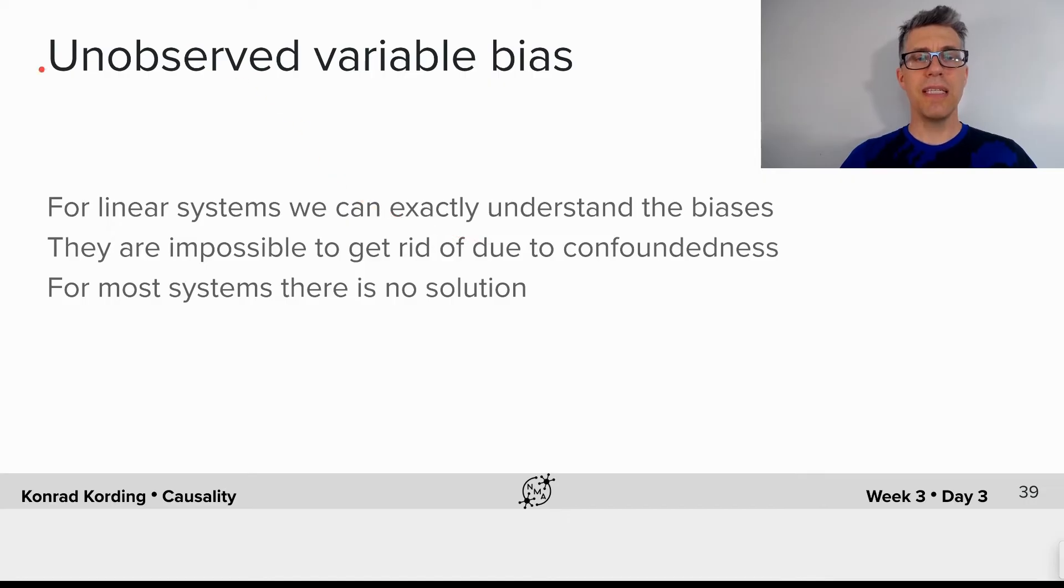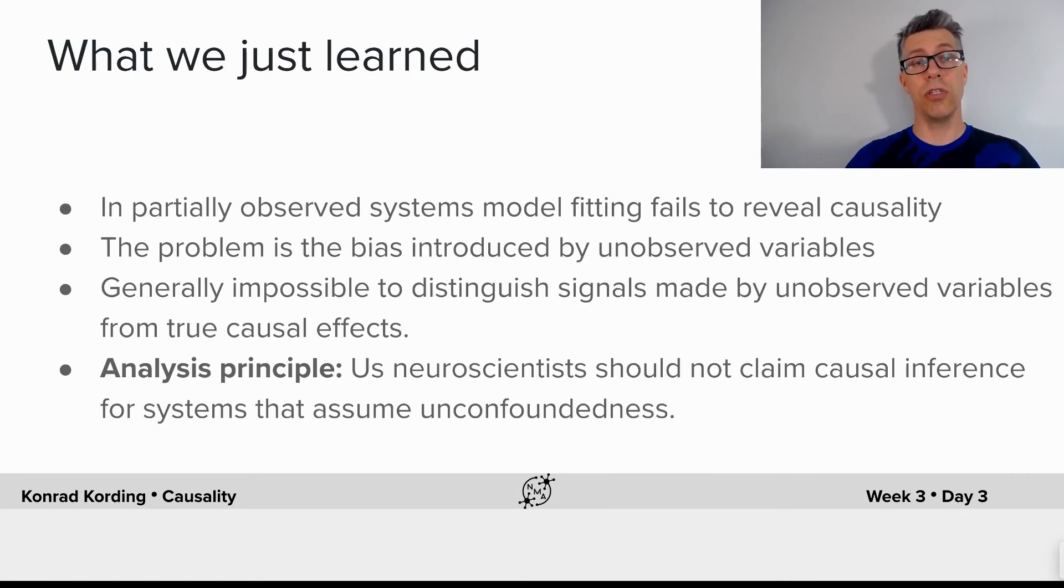Now that is because there's the unobserved variable bias. For linear systems, we can exactly understand these biases. They're impossible to get rid of because of unconfoundedness. And for most systems, there is no solution to the problem.